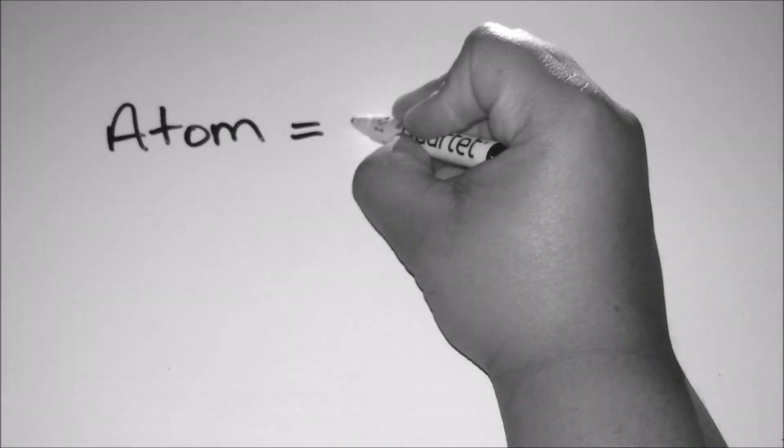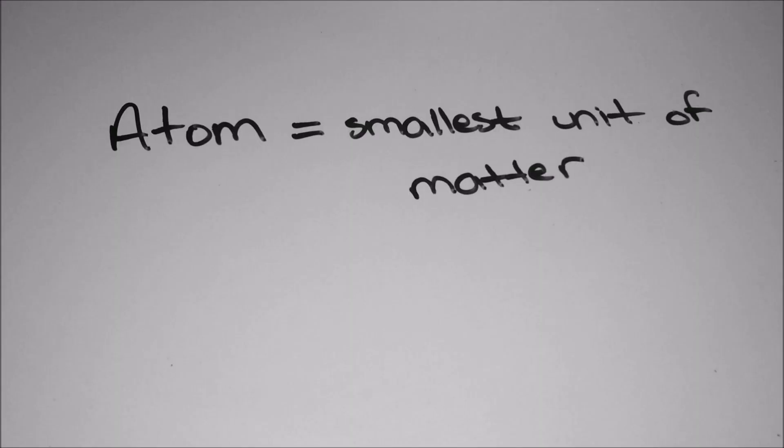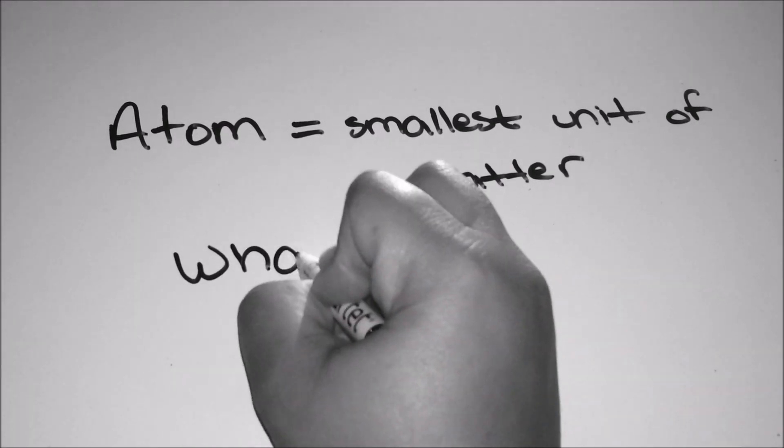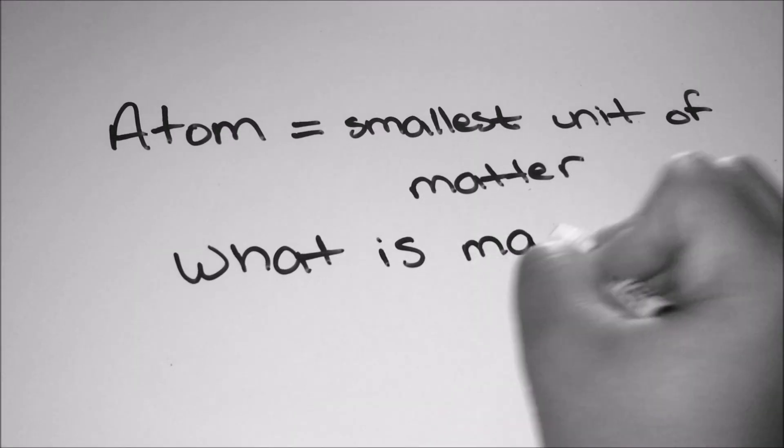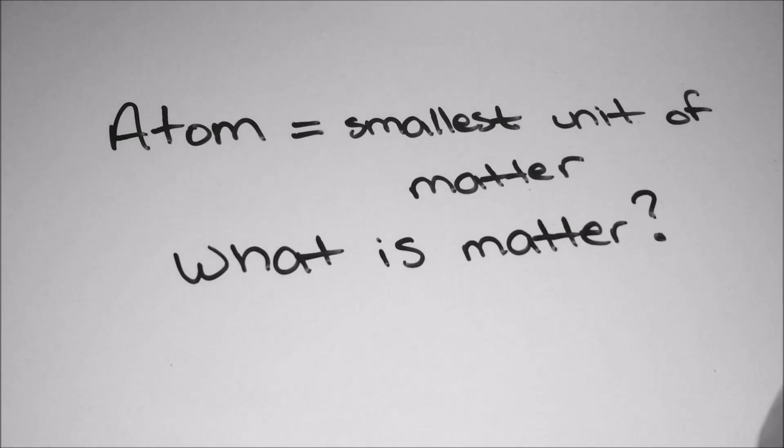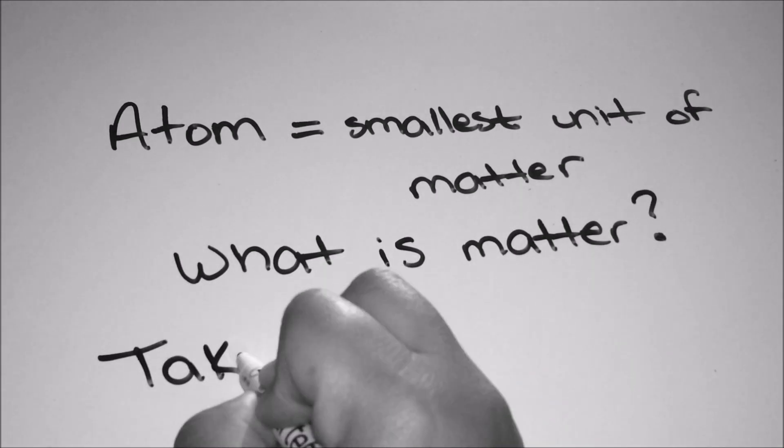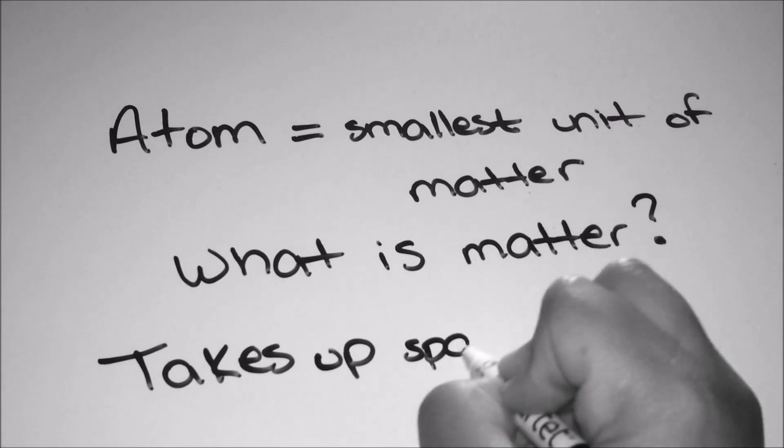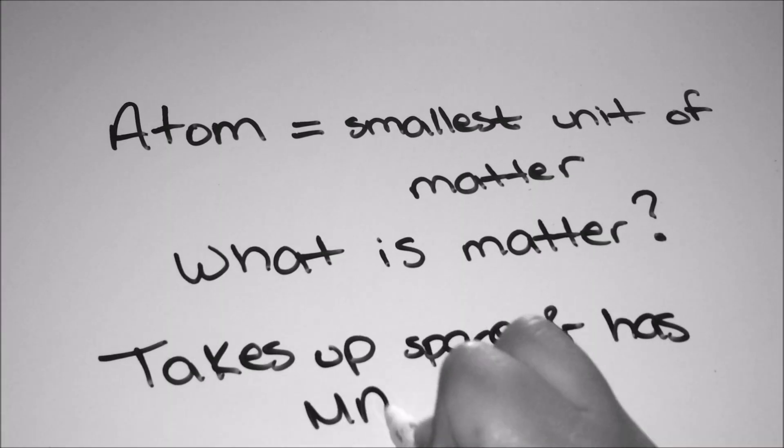The smallest level of organization are atoms. Atoms are the smallest unit of matter. Before we get to the atom, let's define matter. Matter is anything that occupies space and has mass. So the smallest anything that has mass and takes up space is an atom. An atom is so small that a cell is made up of billions of these atoms.